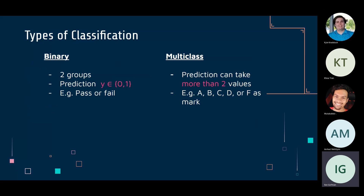There are different kinds of classification. Binary classification is when we have two groups and predict one of them — for example, pass or fail, or spam or not spam. Multi-class classification involves predicting from more than two values — for example, predicting a letter grade (A, B, C, D, or F) or identifying what animal is in an image. Multi-class builds off binary classification.